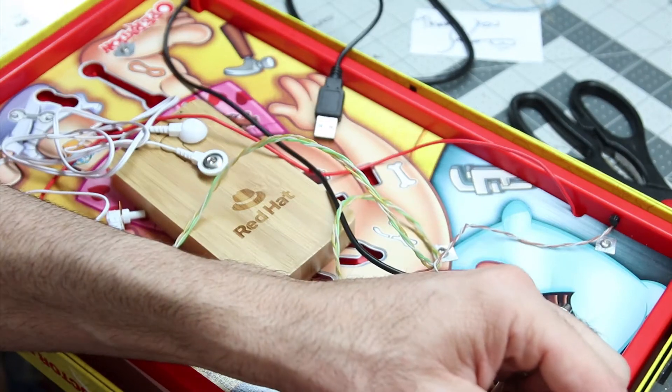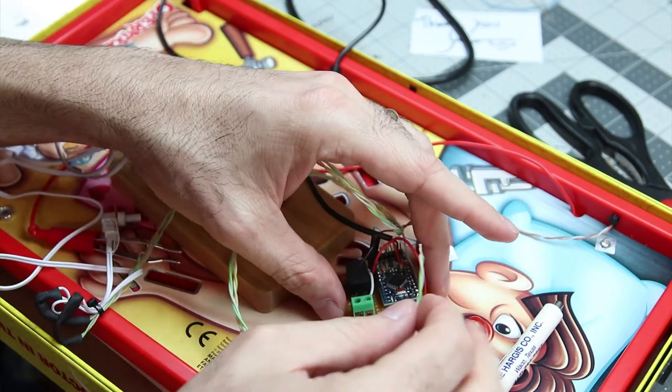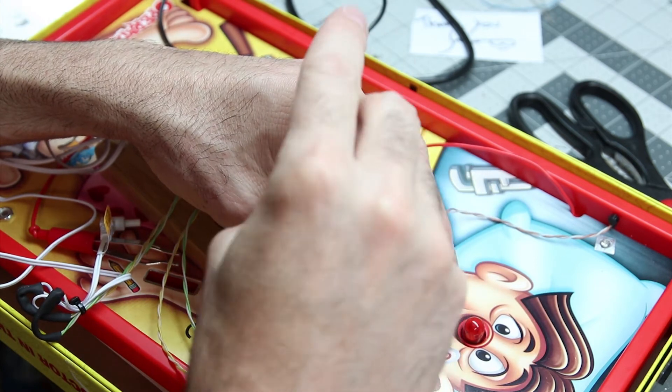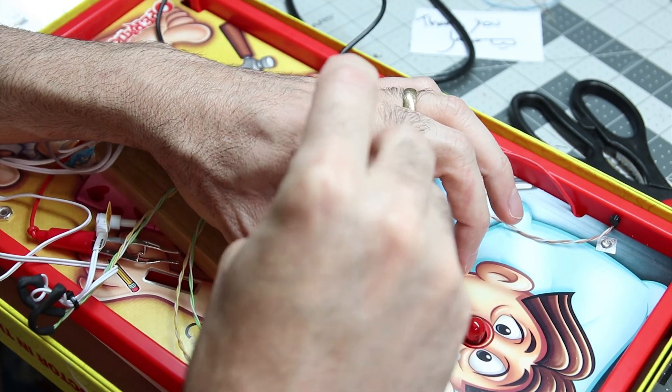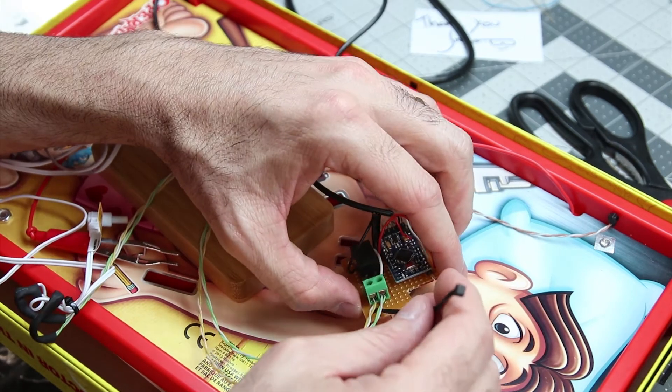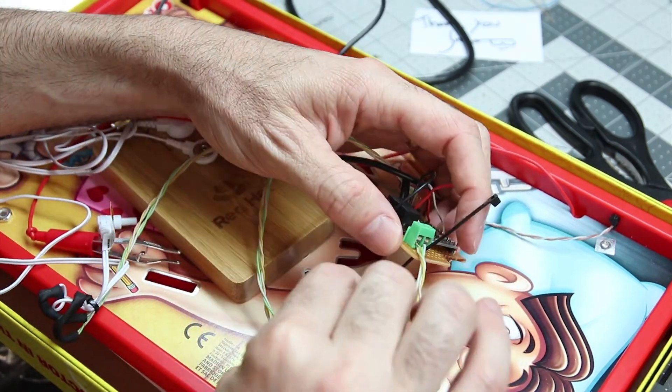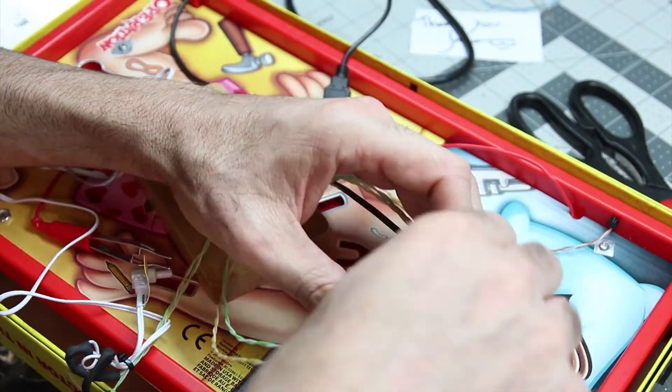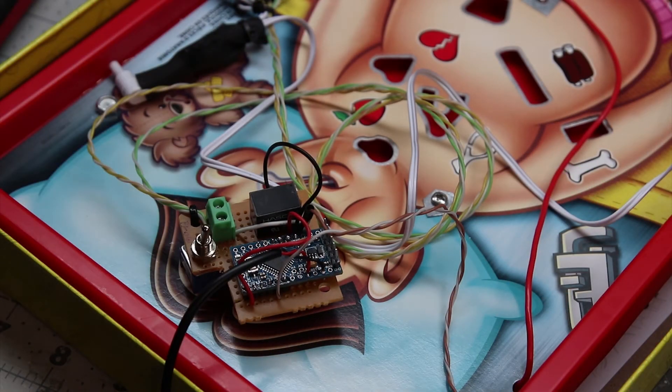So that TENS unit, that little module plugs into the unit itself and then you've got two little sticky pads you put on your arm and then you attach the end of the leads onto it.